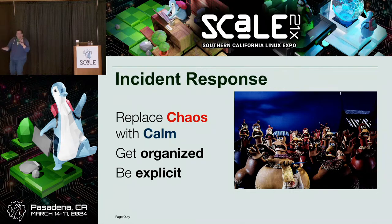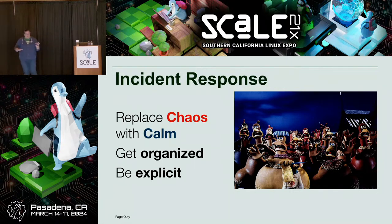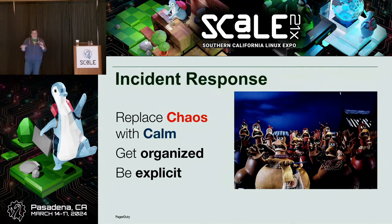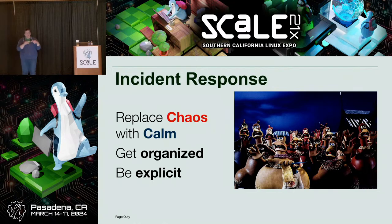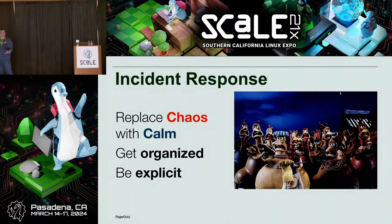A lot of folks don't get into that in a natural way, so you want to get to a place where you're practicing it. These kinds of chaos engineering practices are really good for that. You are simulating an outage — you want to simulate what happens downstream of that outage, what your organization expects you to do.